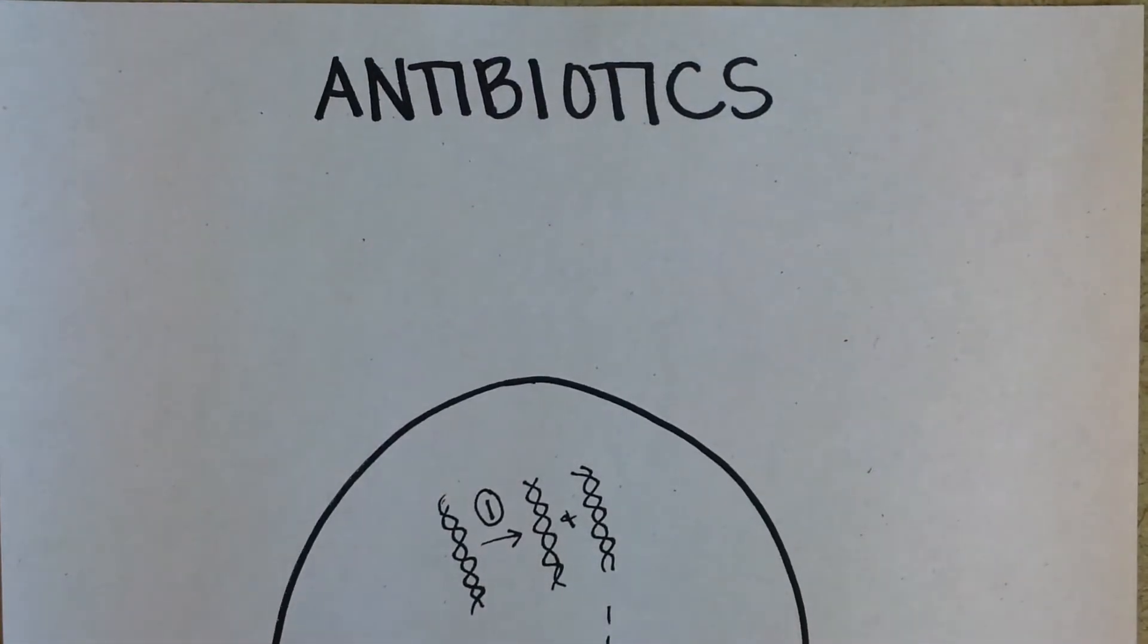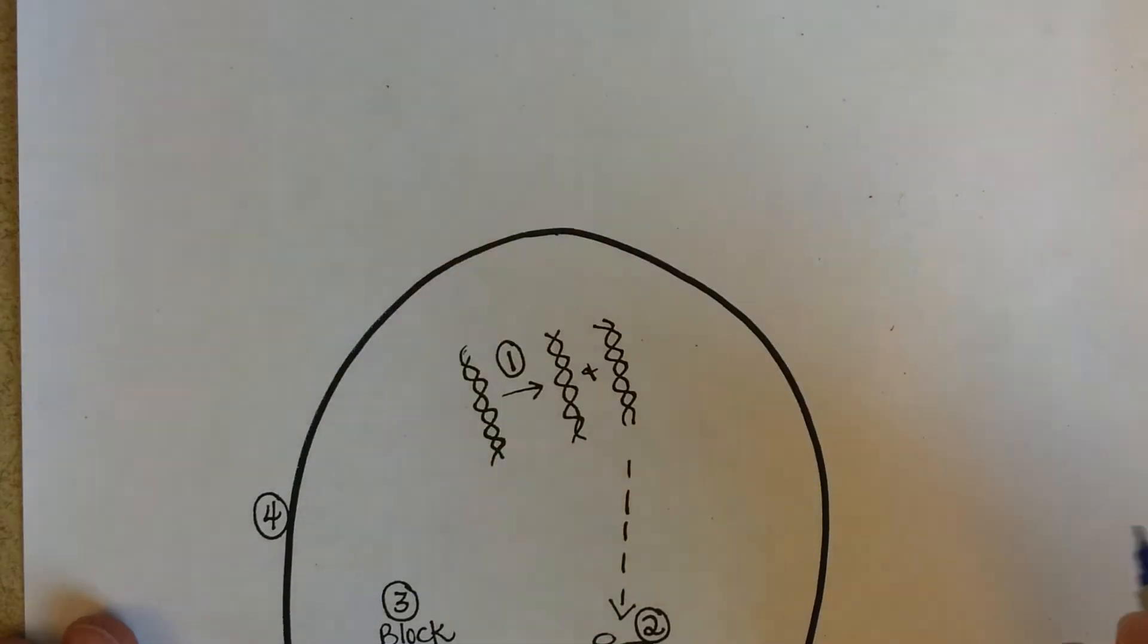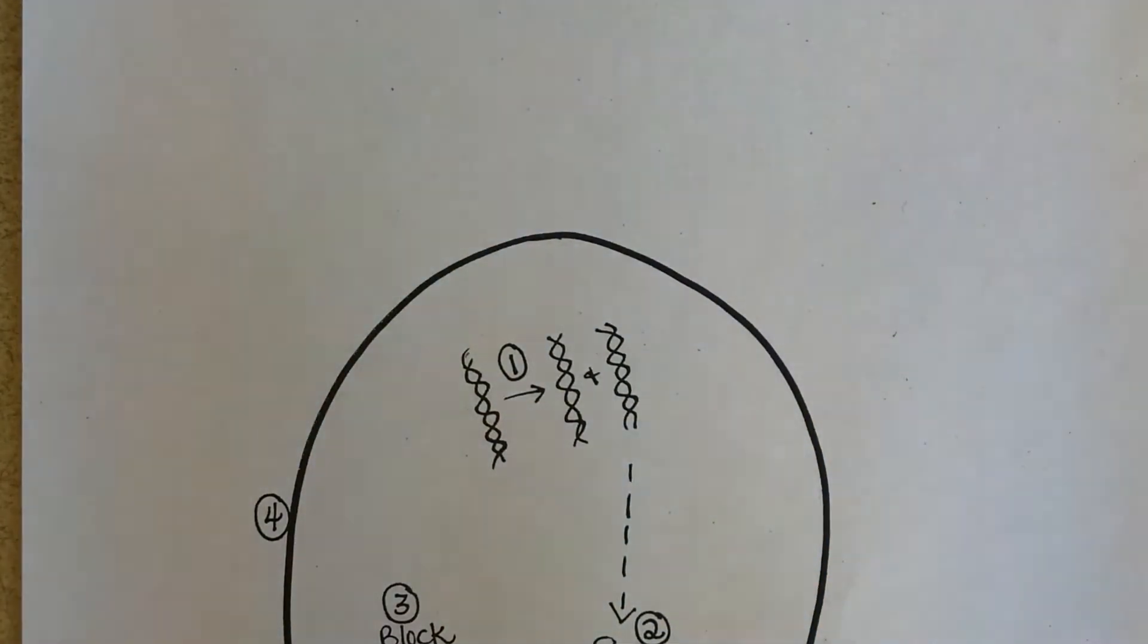Okay, on this page we're going to discuss four different ways that antibiotics can inhibit bacterial cells. So we'll imagine that this is a bacterial cell, and example number one...